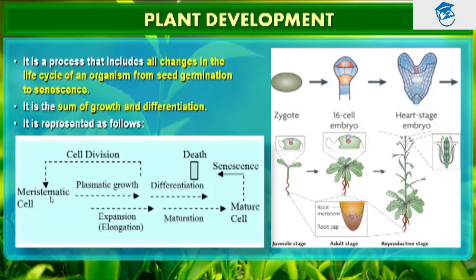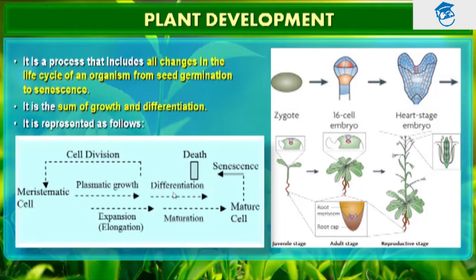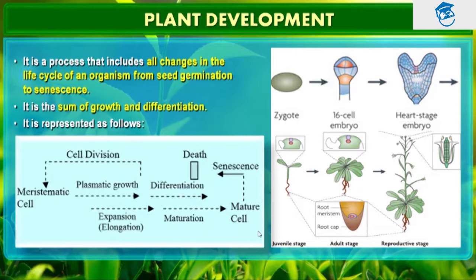This is the meristematic cell which keeps on dividing — this is the plasmatic growth. Under plasmatic growth it differentiates. Plants follow different pathways in response to environment or phases of life to form different kinds of structures, which we call plasticity. Under plasmatic growth the cell expands or elongates, and because of elongation it matures to form a mature cell, and then in the latest progression the cell dies, which we call senescence.